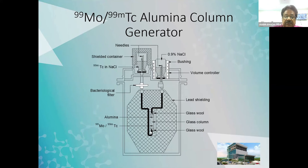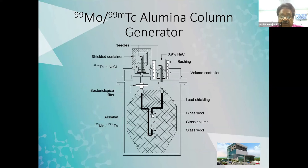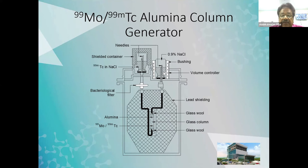The generator is kept in a lead shield so that when we are handling and using it, the radiation dose is minimum. This is the column with molybdenum absorbed in it. We keep a 10 ml saline vial at the top, and on the other end we keep an evacuated vial. The saline is drawn through the tubes, comes to the column, elutes the pertechnetate, passes through a filter, and comes out into this vial, which is now ready to be used as a radiopharmaceutical.